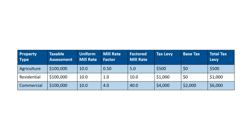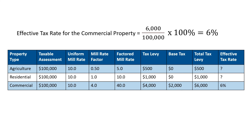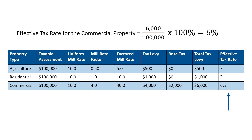In our sample calculation, the total tax levy for the commercial property is $6,000, $500 for the agricultural property, and $1,000 for the residential property. The effective tax rate for the commercial property is 6%. Using the same formula, it will be 0.5% for the agricultural property and 1% for the residential property.